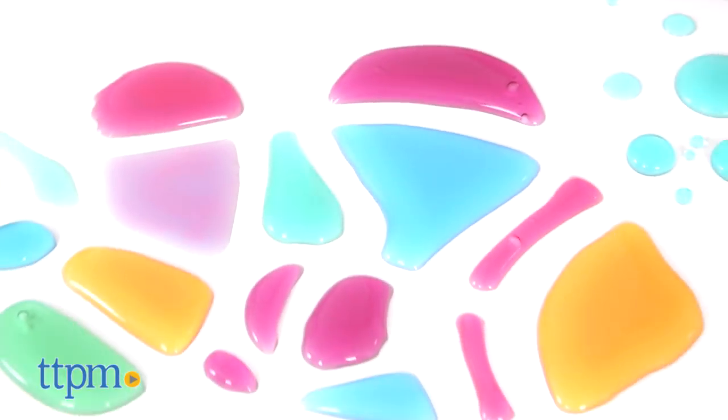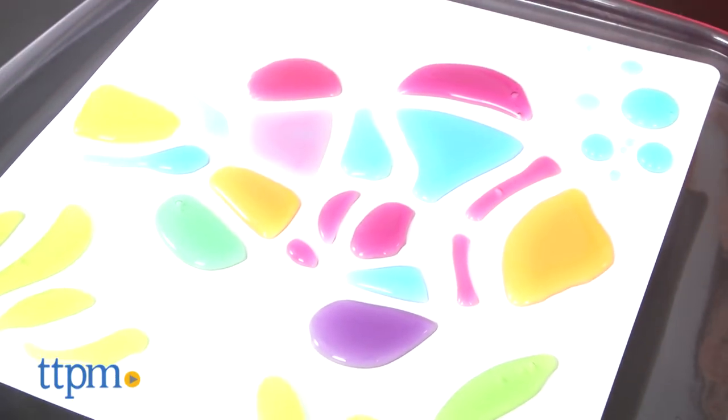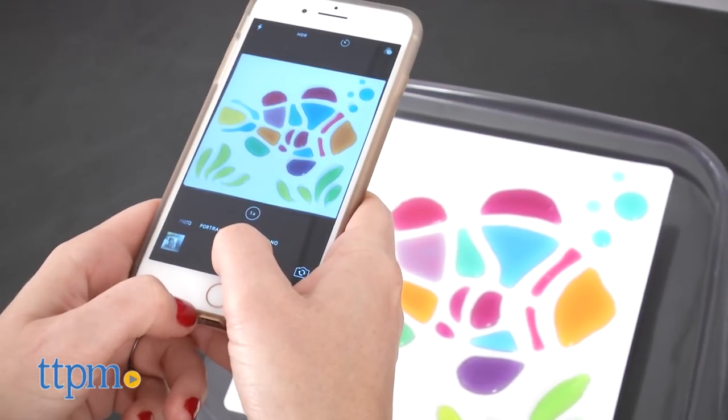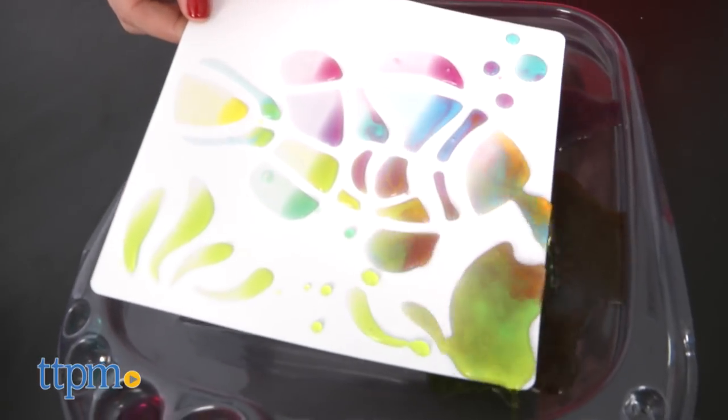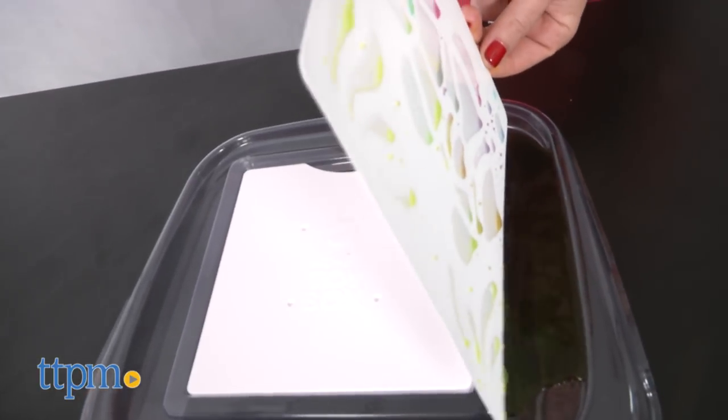Once the design is complete, kids are encouraged to take a picture of it or have their parents take the picture and share it with their friends using the hashtag Art Splash. One of our favorite parts of this toy is it's so easy to clean up and can be played with again and again. Just wipe the art sheet clean and decorate it again.